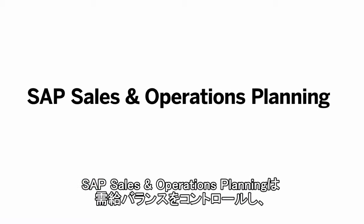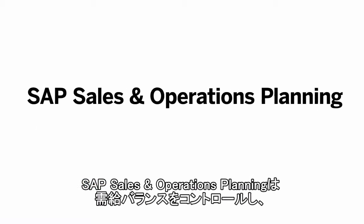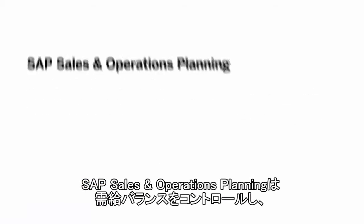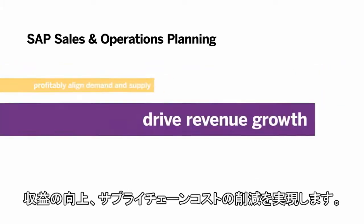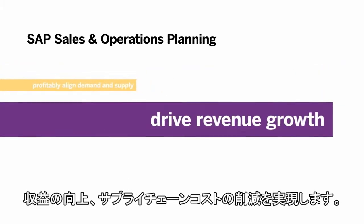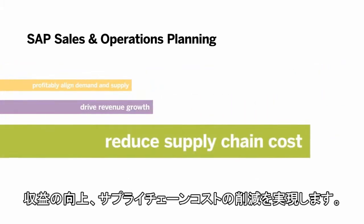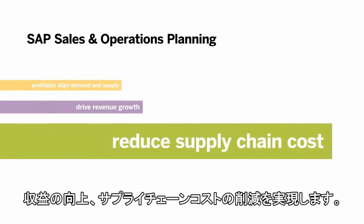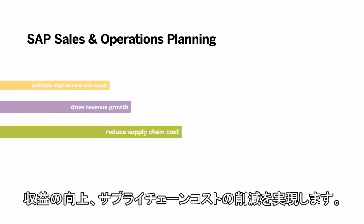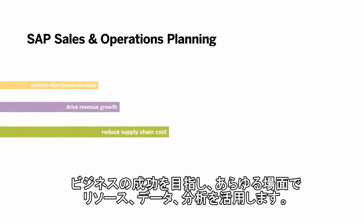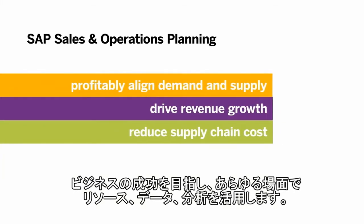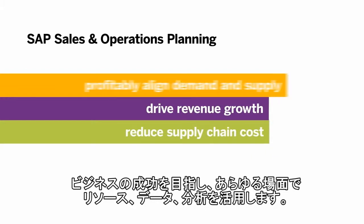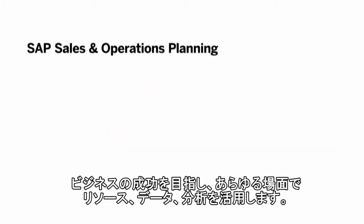SAP Sales and Operations Planning — helping you profitably align demand and supply, drive revenue growth, and reduce supply chain cost. Bringing together the people, data, and analytics you need at any moment to drive business success.